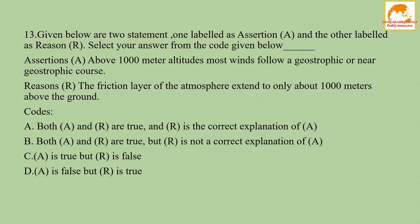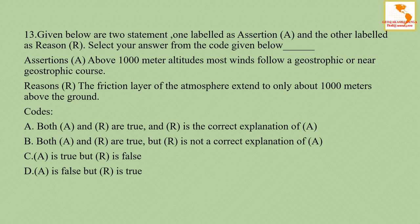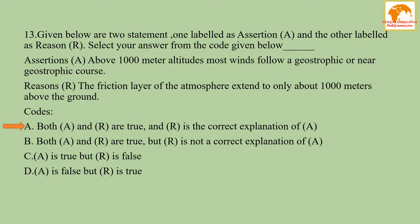Question number thirteen: given below are two statements. Assertion: above 1000 meters altitude, most winds flow a geostrophic or near-geostrophic course. Reason: the friction layer of the atmosphere extends to only about 1000 meters above the ground. The assertion is correct and the reason is also correct. The correct answer is option A — both A and R are true and R is the correct explanation of A.